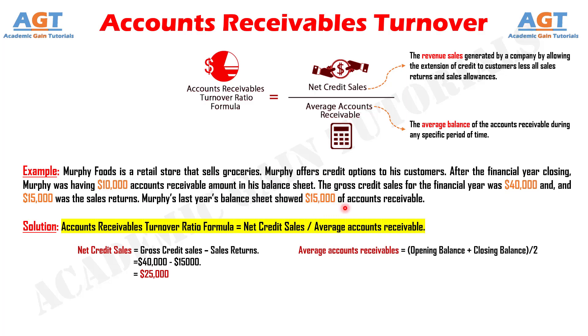So, average accounts receivable equals $10,000 plus $15,000 divided by 2, which gives $12,500 as the average accounts receivable.